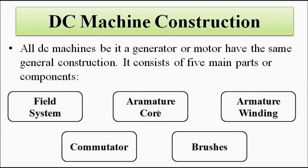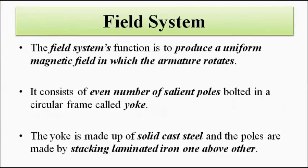Now let us discuss them one by one along with their diagrams. The field system — its function is to produce a constant uniform magnetic field in which the armature rotates. Fleming's rule comes into play here. In the case of this DC generator, the field system consists of a circular frame called the yoke.